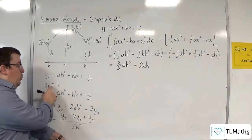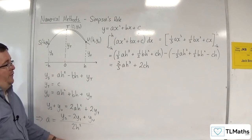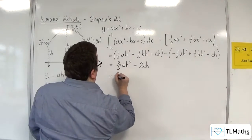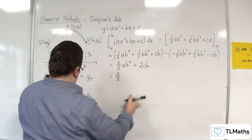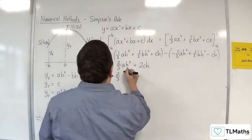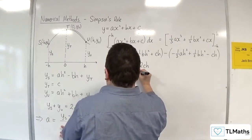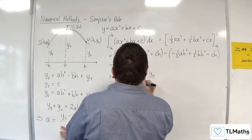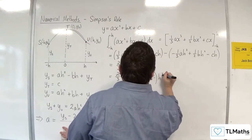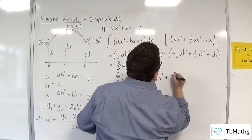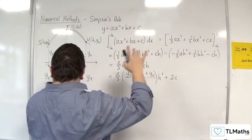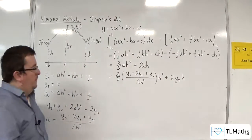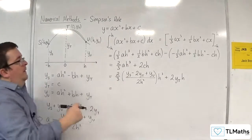Now remember, we know what c is. It's yt. So I can replace the c with yt. And I know what a is. It's that. So we've got two thirds times this times h cubed. So ys take away 2yt plus yu over 2h squared h cubed plus 2yt times h.